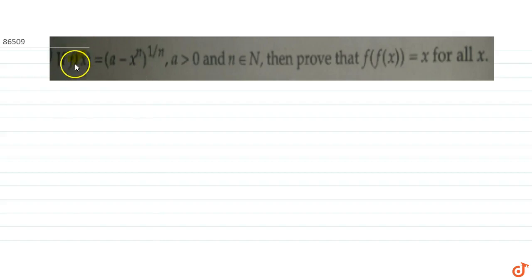In this question we are given if f(x) equals a minus x to the power n, whole power 1 by n, where a is greater than 0 and n belongs to natural numbers, then we have to prove that f(f(x)) equals x for all x.